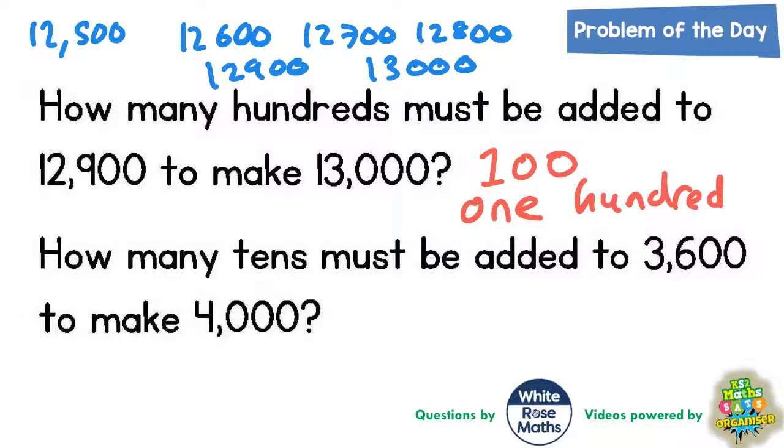Of course you could also do a column method. You could just find the difference between them. So 13,000 subtract 12,900 would go like this: 0 take 0 is 0, 0 take 0 is 0 again, 0 take 9 you can't do so you would borrow from the 3 and call it a 2 and the 1 you've borrowed makes that into 10. 10 take away 9 is 1, 2 take away 2 is 0 and 1 take away 1 is also 0. So again we've got our answer of 100.